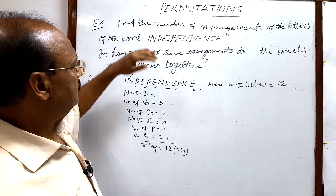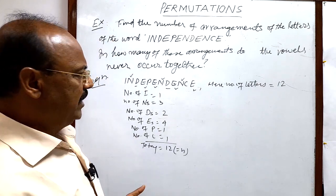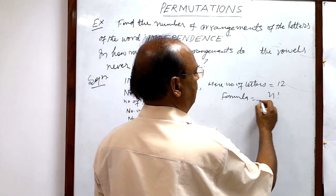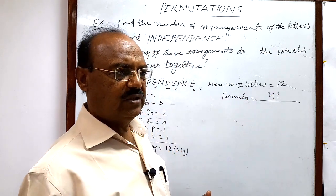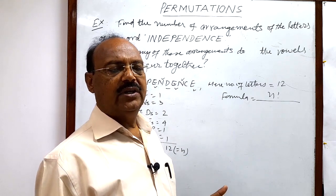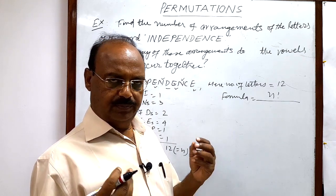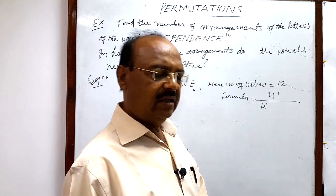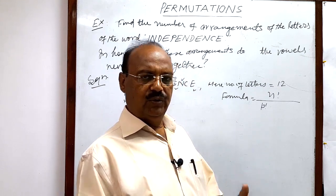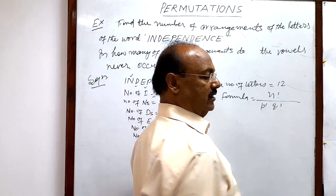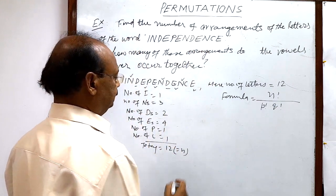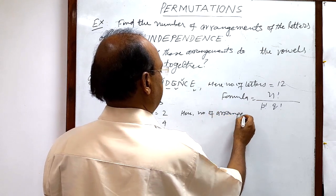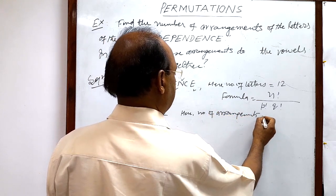Let us see the first part. Recall the formula: when some of the objects are alike, we use n factorial divided by the factorials of the counts of alike objects. If p objects are alike, divide by p factorial; if another q objects are alike, divide by q factorial, and so on.